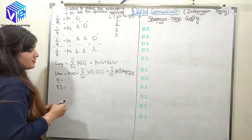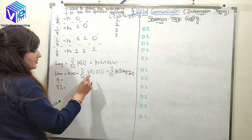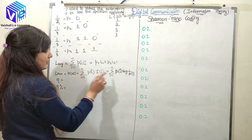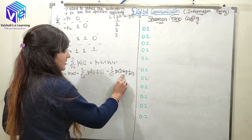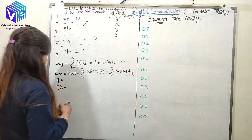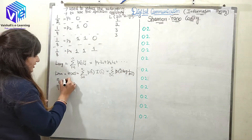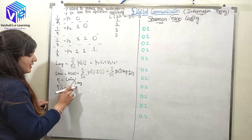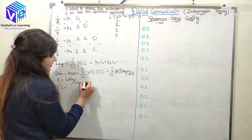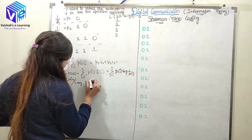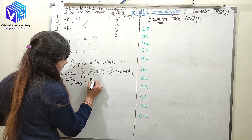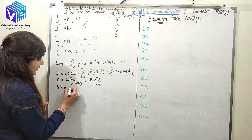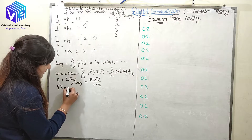The minimum bit length is given by entropy. The formula for entropy is the summation of P_i × log(1/P_i) for i = 1 to N, since information is represented by log(1/P). Efficiency is given by minimum length over average length, i.e., H(X) divided by L_avg. To find percentage efficiency, multiply by 100.